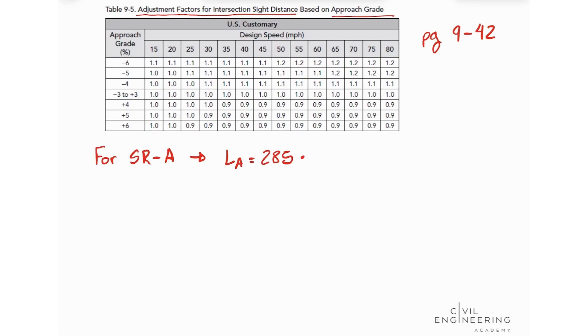So we have that for our State Route A our approach grade is minus 4% at 55 miles per hour. So let's look, minus 4 and 55, we got 1.1, so we need to multiply this by 1.1 and we're going to get our length A is 313.5 feet.